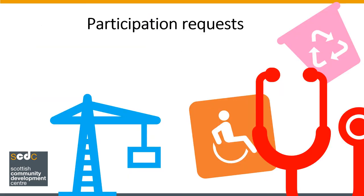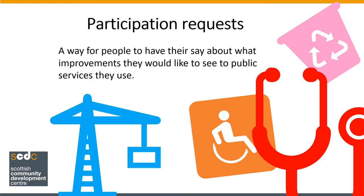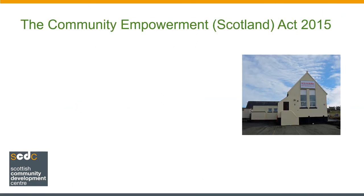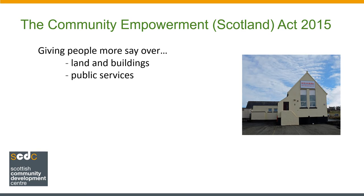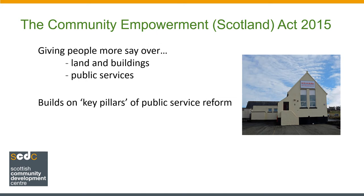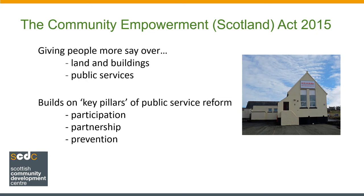Participation requests are one way to participate. They are a way for people to have their say about what improvements they would like to see to public services they use. They are part of the Community Empowerment Act, which the Scottish Parliament passed in 2015. Among other things, this aimed to give people more say over land and buildings and public services. The Community Empowerment Act is one development in public service reform in Scotland, which emphasises participation, partnership and prevention — making public services more effective at stopping problems from happening in the first place.